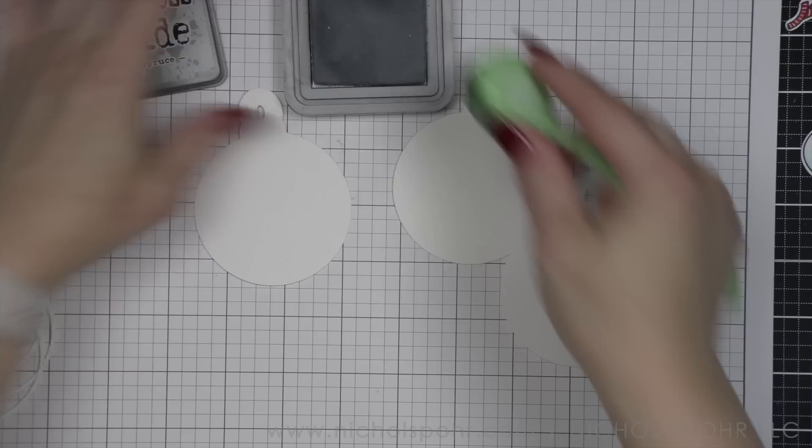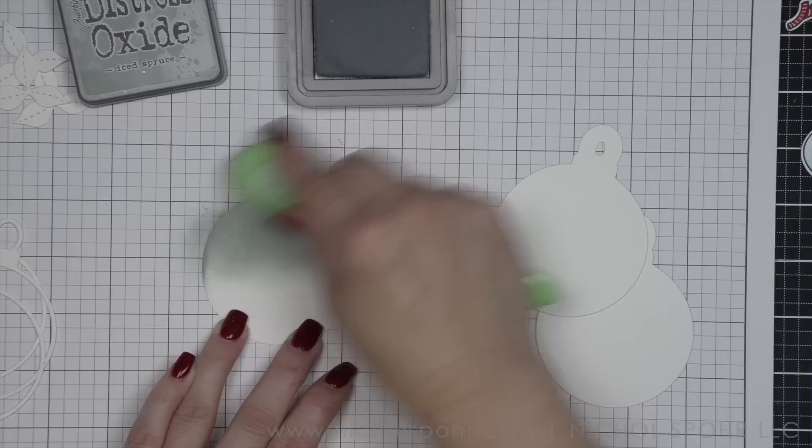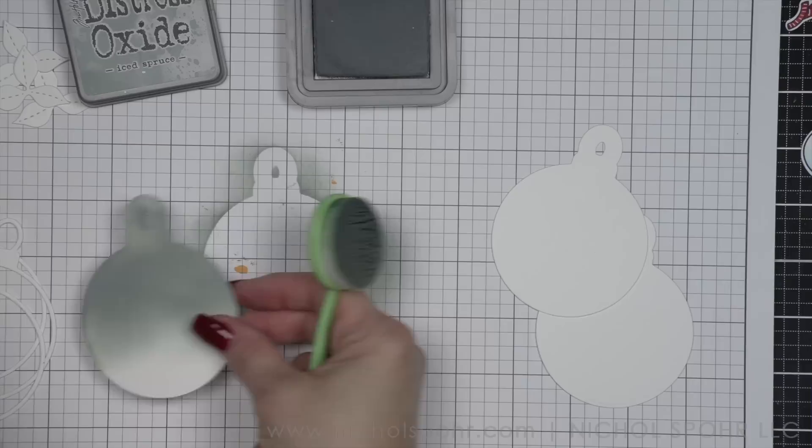And I only have white and black. I use white ninety-five percent of the time, but we're using both today on the backer of our scene. So this is the other solid white ornament. I am taking my color of the season. I'm calling it. This is my color of the holiday season. Iced spruce.